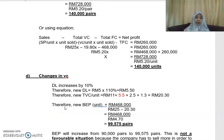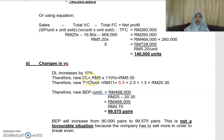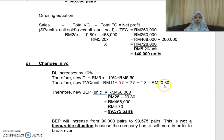Part (d) examines changes in variable cost. If direct labor increases by 10 percent, the new direct labor cost is RM5 times 1.1, giving RM5.50. So instead of RM5, labor cost per pair becomes RM5.50, making the new total variable cost RM20.30 per pair.